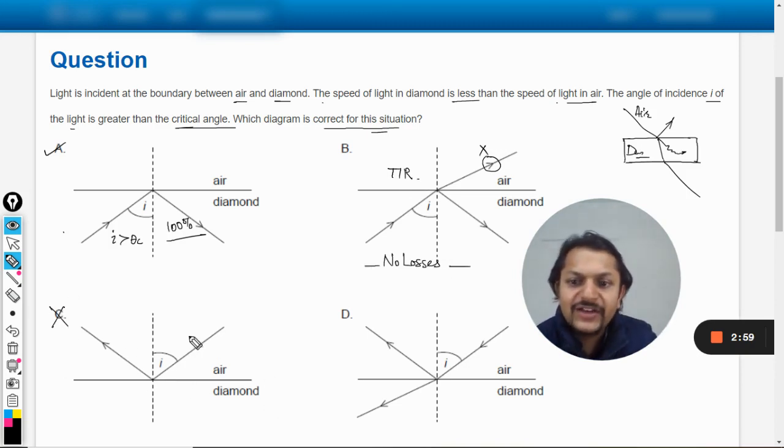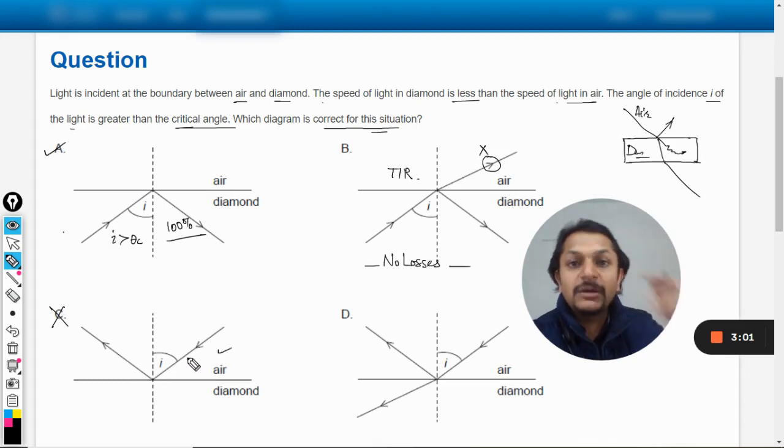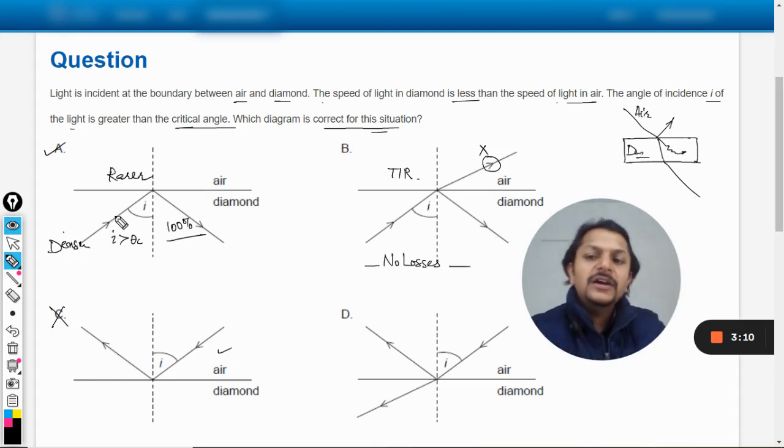It's not a mirror. If it was a mirror, definitely some part of it would have been absorbed, but this is not a mirror. This is total internal reflection, no losses are happening. And obviously this is not right because reflection cannot happen when the light is coming from rarer to denser medium. It happens only when the light is going from denser to rarer.